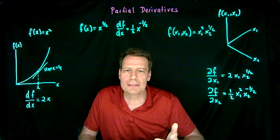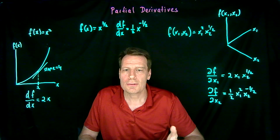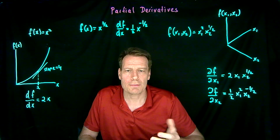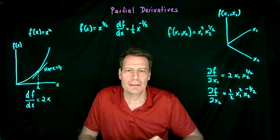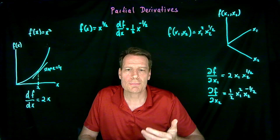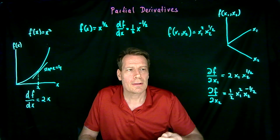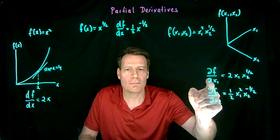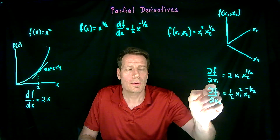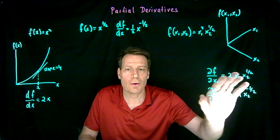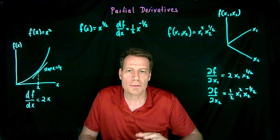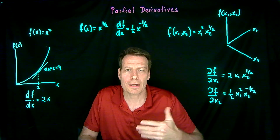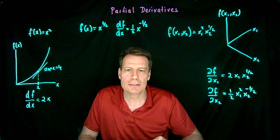So I hope you can see that taking a partial derivative is no more difficult than taking a derivative. It's exactly the same thing, as long as we remember that when we take the partial derivative with respect to a variable, we hold all the other variables fixed as if they were just numbers — or what I call parameters in the animation.